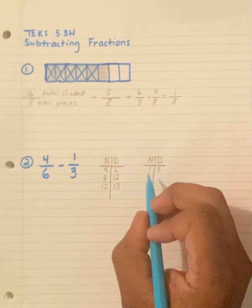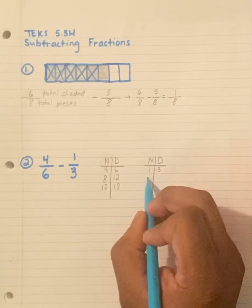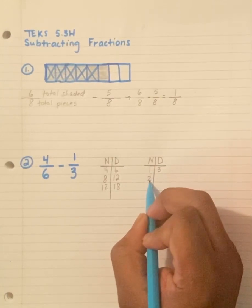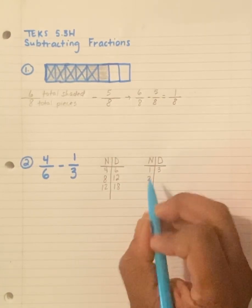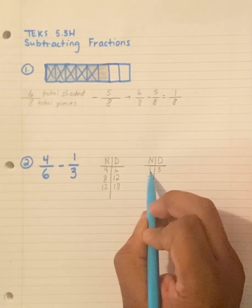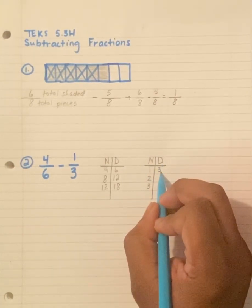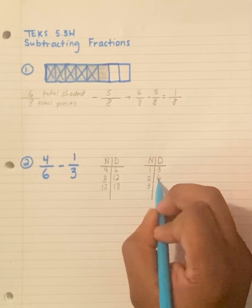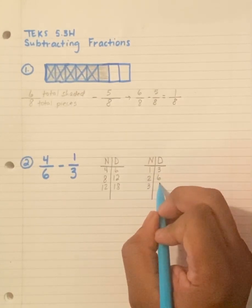I will do the same thing here. 1 plus 1 is 2, 2 plus 1 is 3. Remember, I'm skip counting by the original number. Then I have 3, 3 plus 3 is 6, 6 plus 3 is 9.